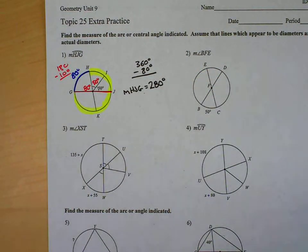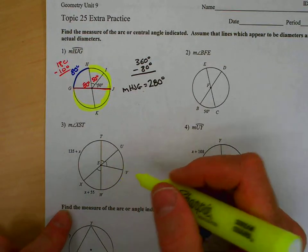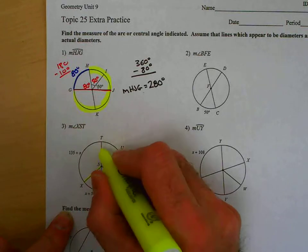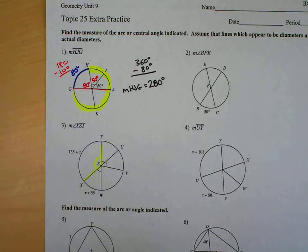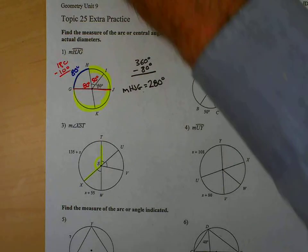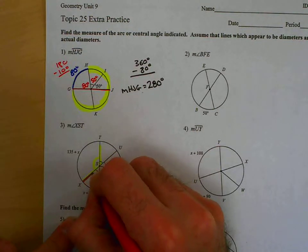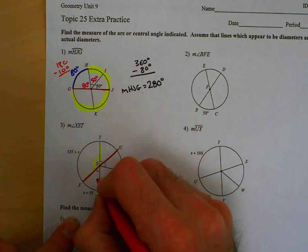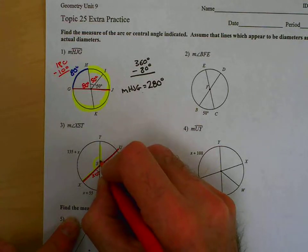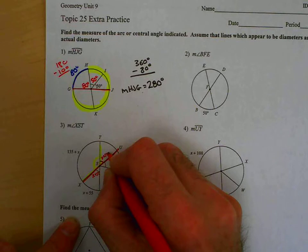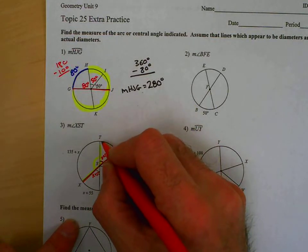The next question, measure of XST. That's this angle, XST. So we're looking for this angle. Again, we have a diameter here. And we have congruent, this arc is equal to this central angle, X plus 55. And then that would make this angle also X plus 55, which would make this arc.